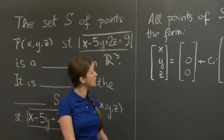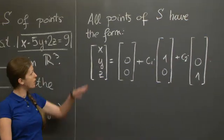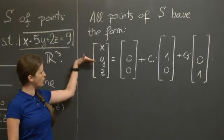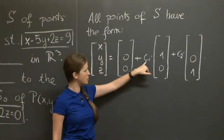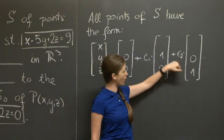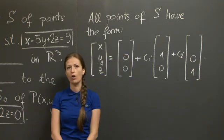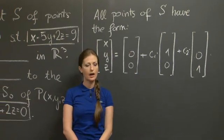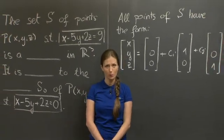After we solve this, we have the second part of the problem, which says all points of S have a specific form: [x, y, z] = [blank, 0, 0] + c₁[blank, 1, 0] + c₂[blank, 0, 1]. And we need to fill out all six blanks. Now, you should pause the video, fill in the blanks, and then come back and see some pretty pictures that I prepared for you.